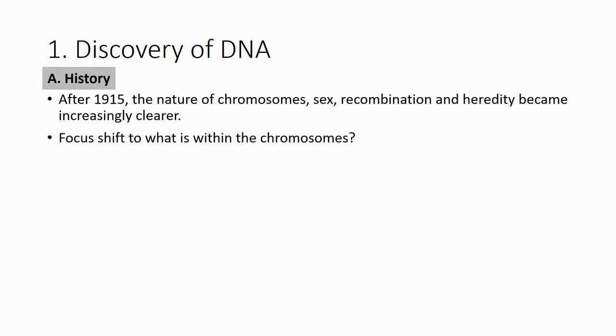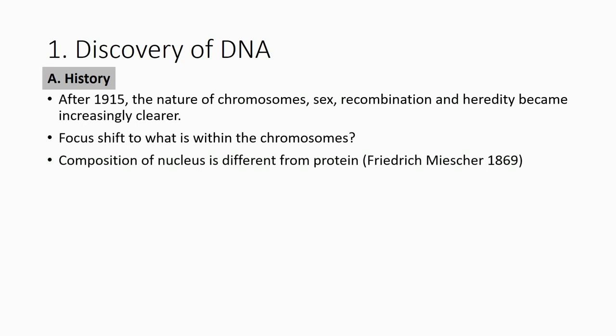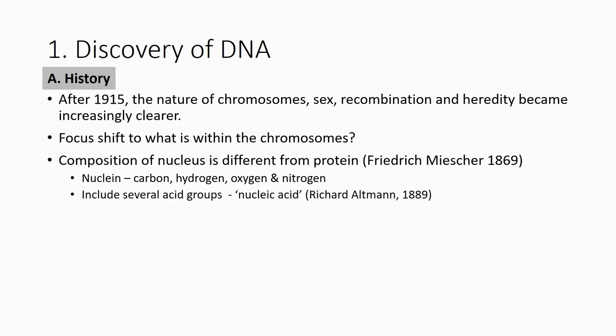They had to focus on what is really inside the chromosome. In a textbook you can see the structure, but at the time people didn't really know how it looked — they knew something was there but didn't know its composition. They did know the nucleus was made of different types of protein, and that it involved several different types of acid groups. Eventually they knew the molecules in the chromosome: it is comprised of sugar, phosphate groups, and bases.